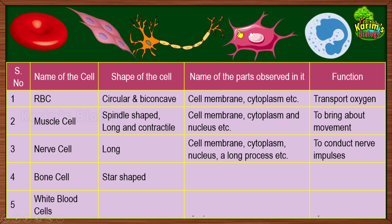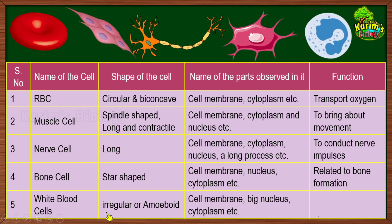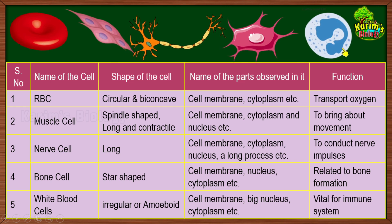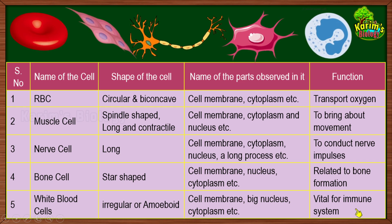Now come to the bone cell — it is star-shaped, roughly star-shaped, and you can find a cell membrane, nucleus, and cytoplasm. Its function is related to bone formation. Now the white blood cells — their shape is irregular or amoeboid. The parts are: cell membrane, a big bilobed nucleus, cytoplasm, and within the cytoplasm you can also see small granule-like structures. Their function is important for the immune system — white blood cells fight germs that enter your body and protect you from diseases.